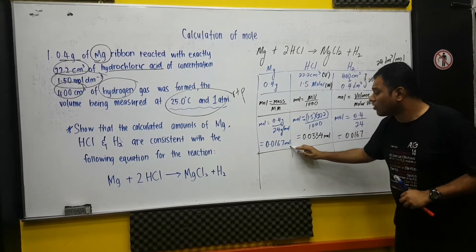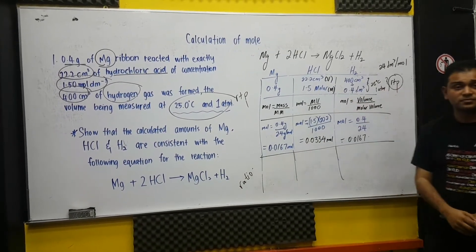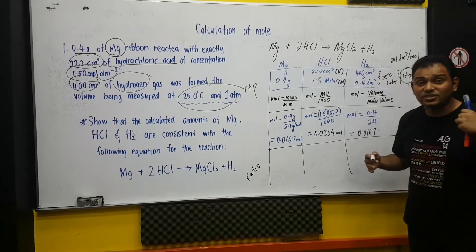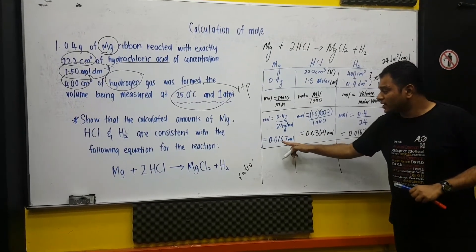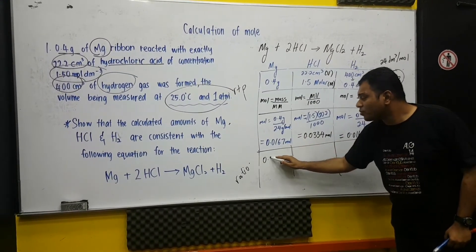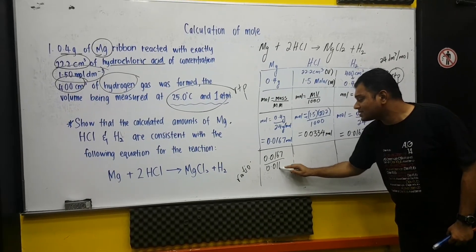The last part of it is actually you need to calculate the ratio. The ratio. So, when you are talking about the ratio, of course, you need to take the simplest ratio. This one, the simplest number, in this case, will be this. Therefore, we have 0.0167 divided by the 0.0167.